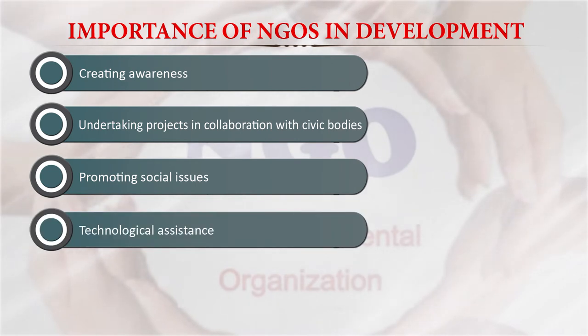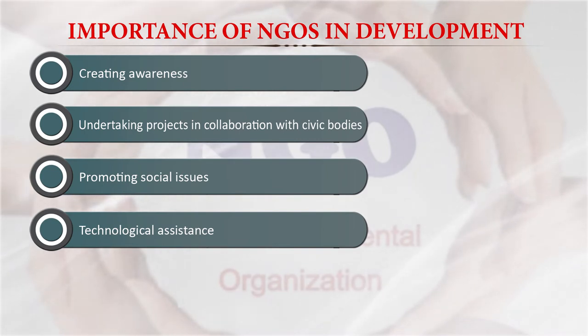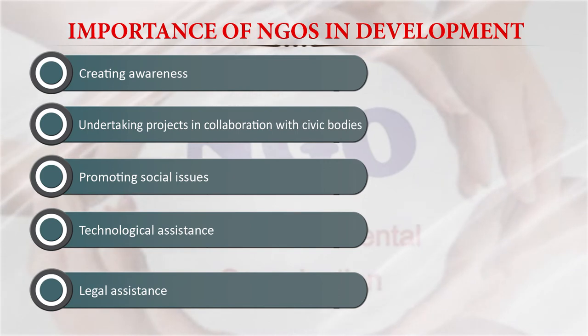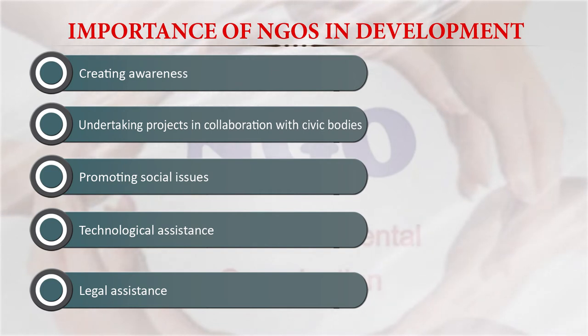NGOs also provide technological assistance, playing a very beneficial role in reaching rural masses and providing technology in different forms — they become innovators in this process. There is also legal assistance, with NGOs playing a major role in advocacy issues and providing legal aid to rural communities. These are the major activities undertaken by NGOs for rural development.